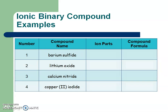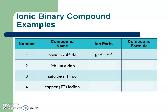Let's look at some examples. If you're given compound names, first figure out the ion parts, then put them together. Pause and see if you can find barium and sulfide. This is binary, so we're looking for a metal and just a non-metal. Barium is plus two and sulfide is negative two. Since the charge numbers are the same, we cross them off and just rewrite the parts, giving us BaS. The -ide ending confirms these are non-metals forming a binary compound.